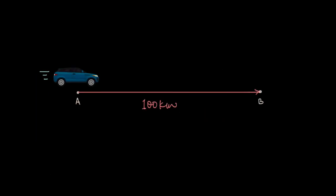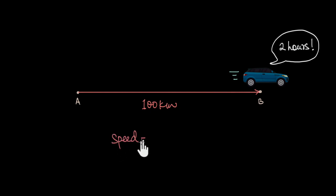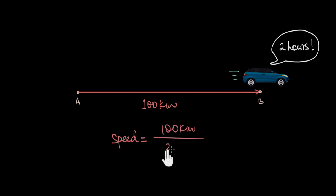Let's say you are driving a car and you go from point A to point B, which is a hundred kilometers apart, and you do that in two hours. So the speed of your car is the distance covered — 100 kilometers in two hours — which is 50 kilometers per hour.